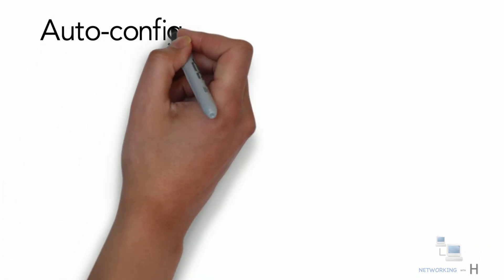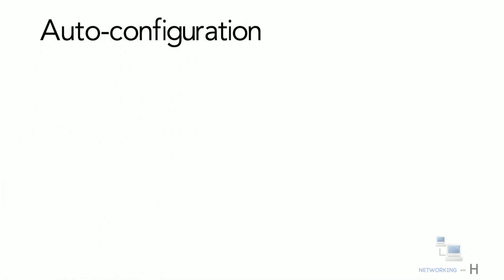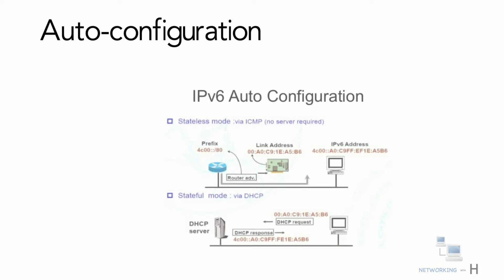The next feature is auto-configuration. IPv6 supports both stateful and stateless auto-configuration modes for its host devices. This means the absence of a DHCP server does not halt inter-segment communication.